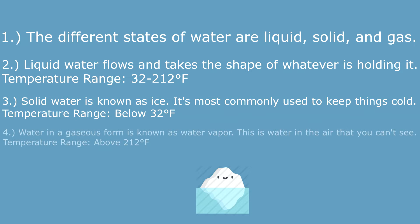Water in a gaseous form is known as water vapor. This is the water in the air that you can't see. This water sits at temperatures above 212 degrees Fahrenheit.